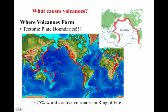Where do volcanoes usually form? Well, at the boundary between tectonic plates. The Ring of Fire, for example, is a hotbed if we mapped all the volcanoes — these are the boundaries between tectonic plates. Why do they happen at the boundaries of plates? Plates are shifting and colliding, and that's causing pressure underneath, causing magma to come to the surface.